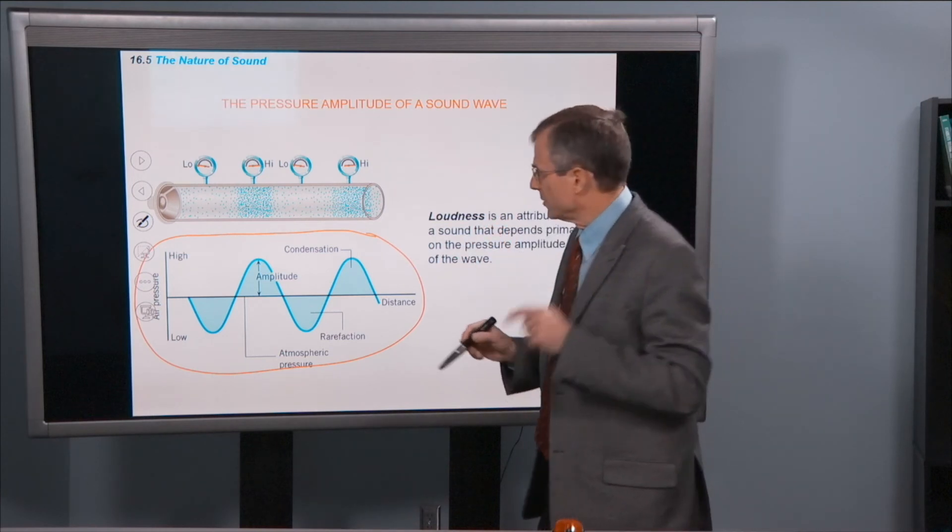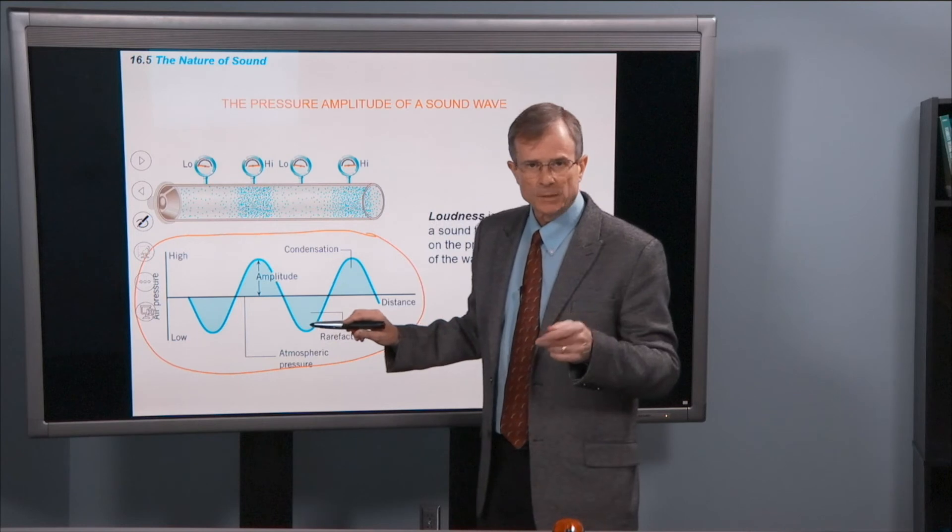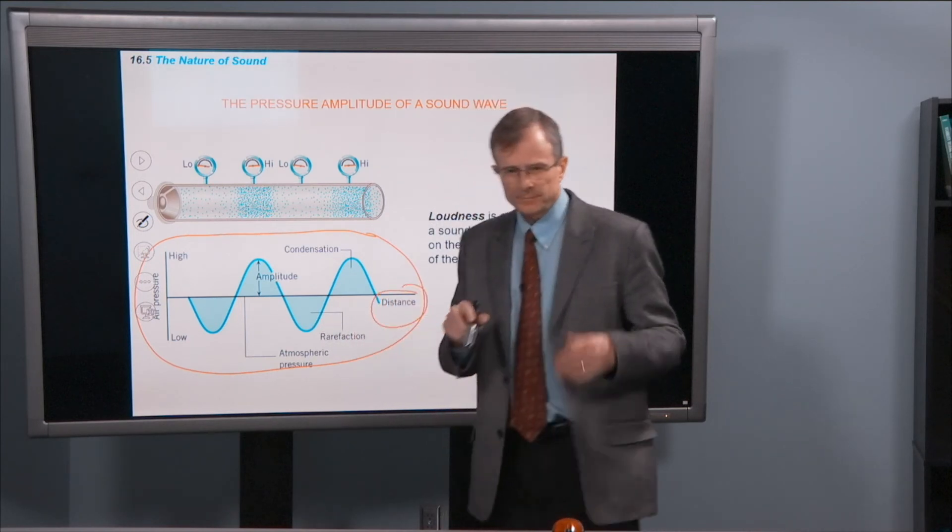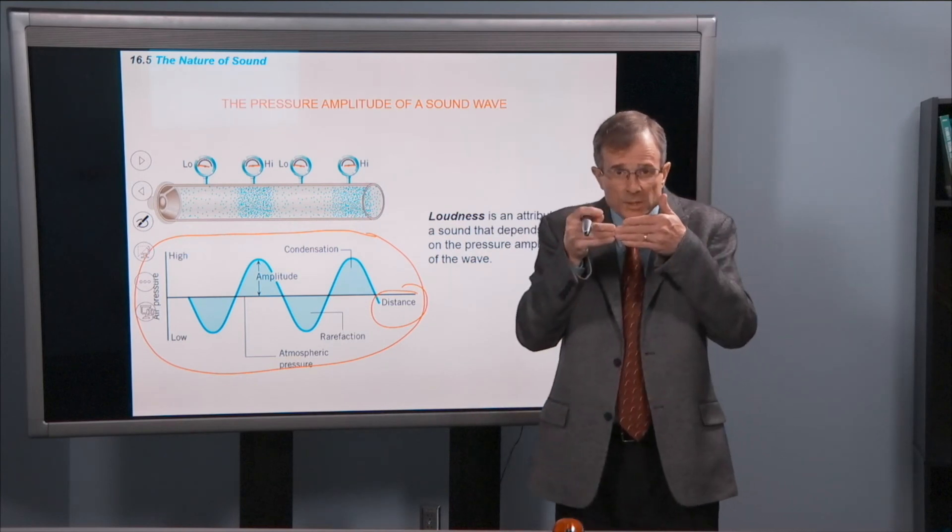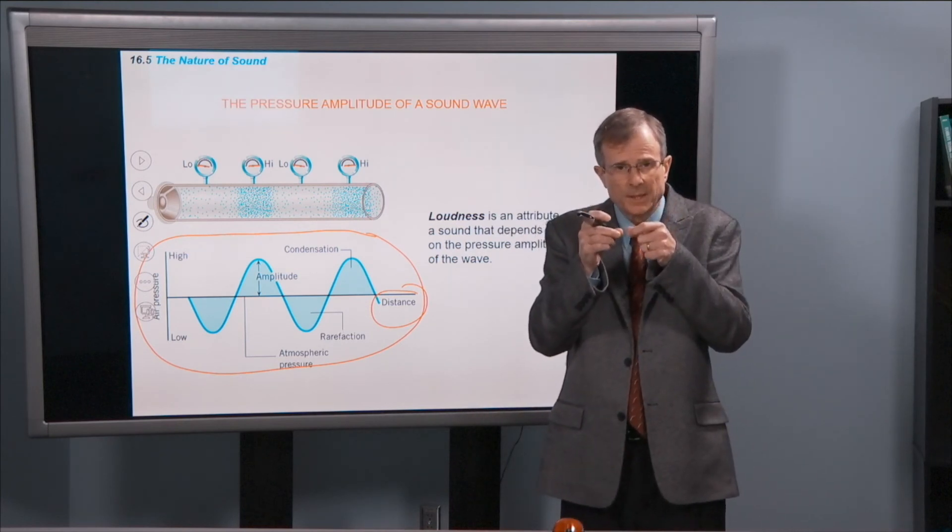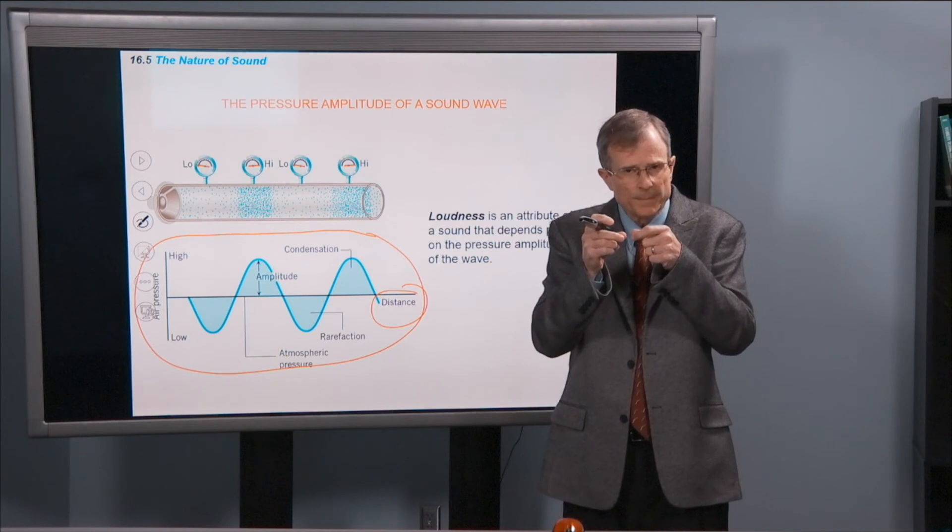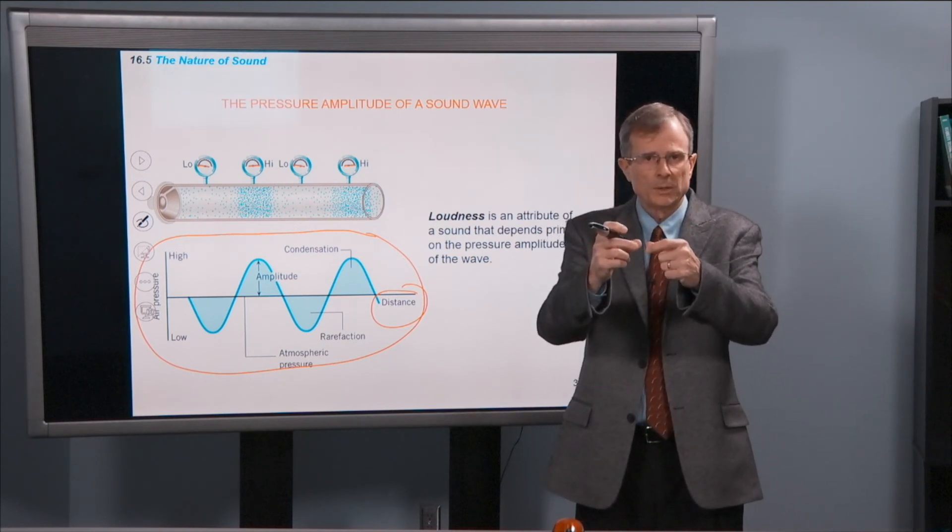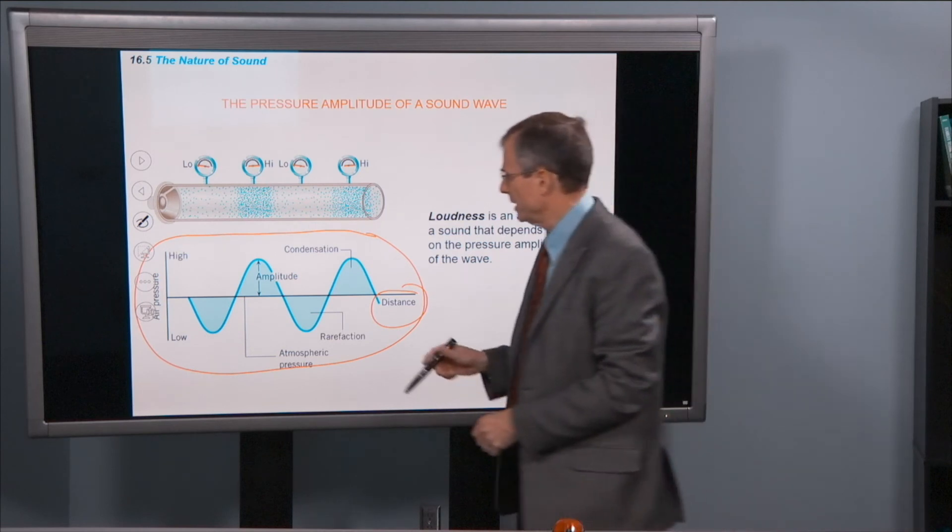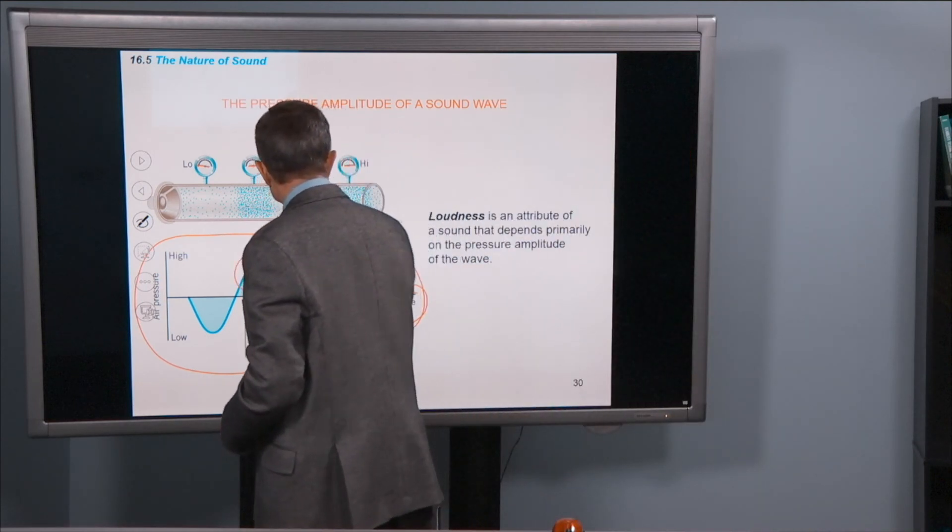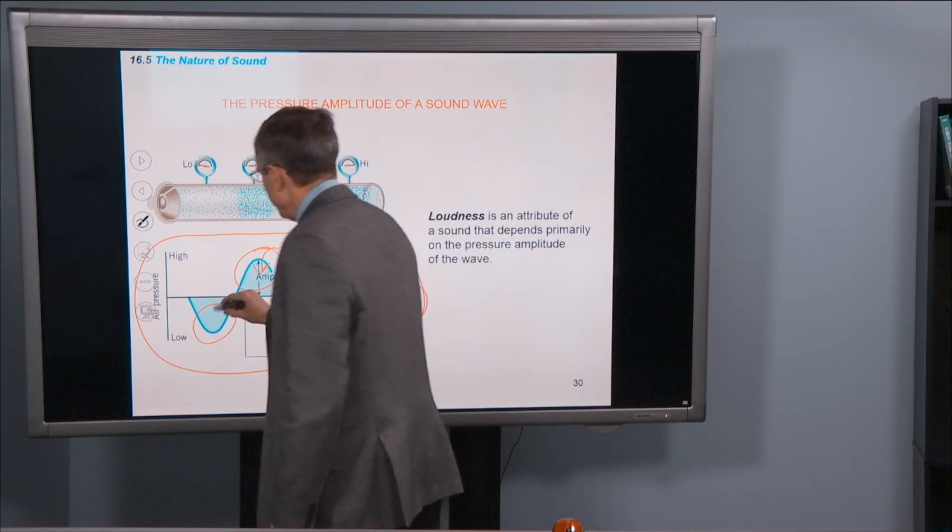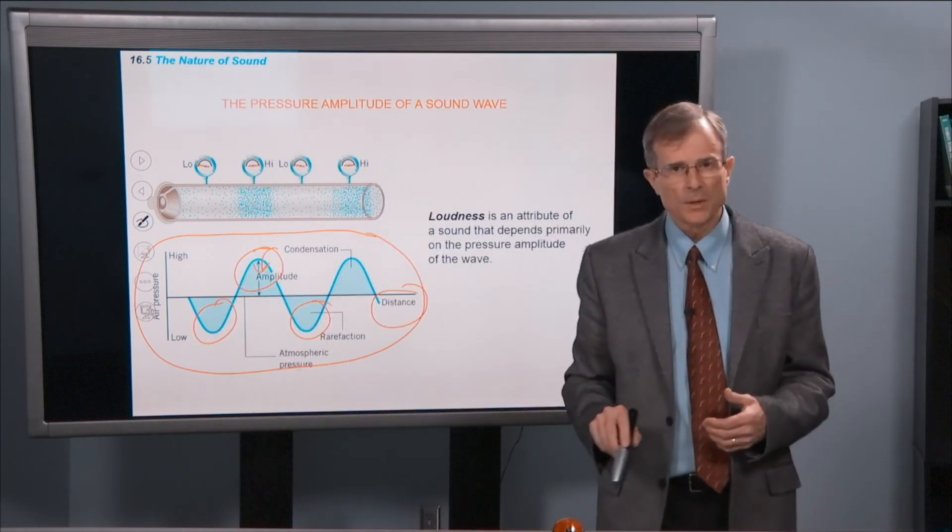What this graph represents is the pressure as a function of a distance. So when my vocal cords come forward, that creates this condensation, this compressed region, and the pressure is high there. Then the pressure is low. Then the pressure is high. Then it's low, etc. So this is the condensation regions, here and here. And then these are the rarefied regions. And that's how we can represent a sound wave.